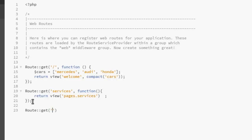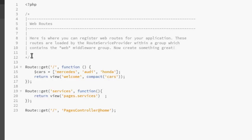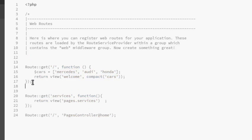We forward slash to the home path, then specify where we are linking to: 'PagesController@home', wrapped in a single quote and closed with a semicolon. This tells the application that anytime you're routing to the home page, it should call the home controller. We haven't actually created this home controller yet, so running the application now would give an error. Let's comment out the old home route for now.